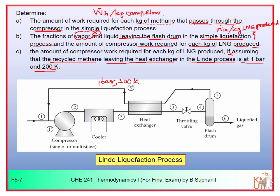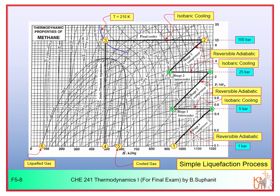For the simple liquefaction process, we start from the inlet point and use the pH diagram of methane to determine the property at each point. At point one — the inlet at 1 bar and 280 Kelvin — you locate that point on the pH diagram and read the enthalpy value directly from the x-axis. The isotherm of 280 Kelvin is indicated on the diagram.